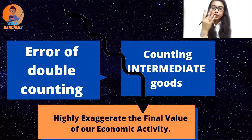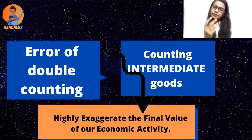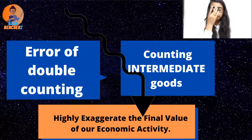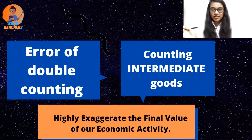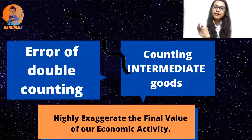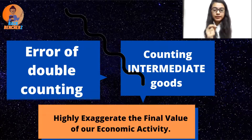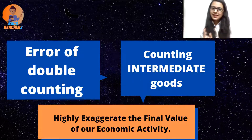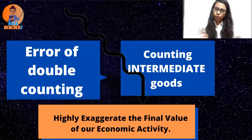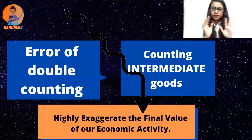Similarly in an economy, the final value would be exaggerated if you add intermediate goods as well. That's why we only add final goods — to avoid double counting. The economy's final value would be falsely inflated otherwise. That's all — nothing complicated.